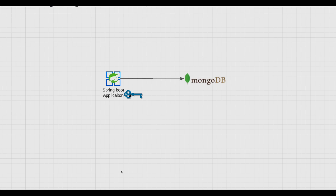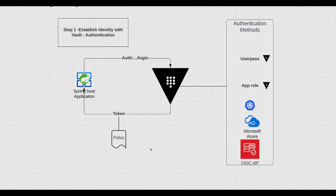That is what really brings us to Vault. With Vault, we have a different approach: we centralize all of our secrets inside a central Vault, and then our applications make requests to Vault to retrieve those secrets. The application first needs to authenticate itself, and there are many different authentication methods available — like AppRole, Kubernetes, Azure, and others — depending on the platform you're using.